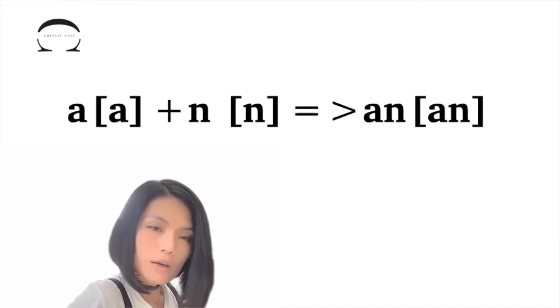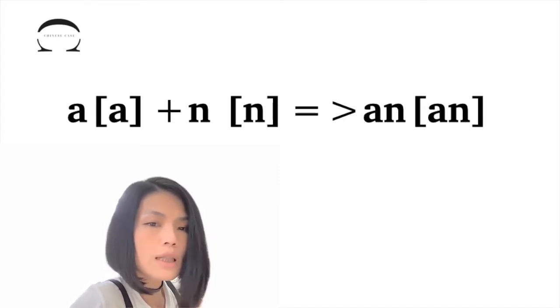Step 2: From here, we glide into N. So like this: An. An. So final AN, that's our target sound.